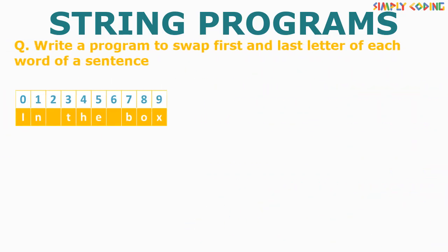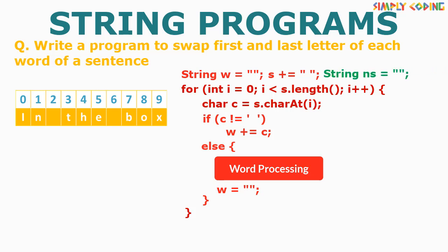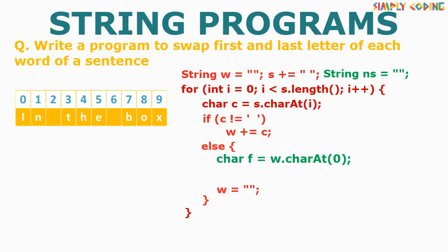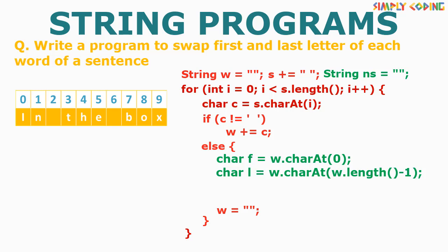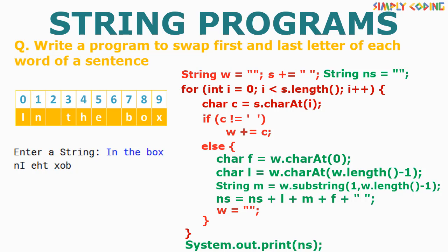The next program is to swap the first and last letter of each word. Here again we will take our template. We will declare a string variable before the loop. Inside the loop, we will first extract the first character using charAt(0) and the last character using charAt(w.length()-1). Then we will use the substring function from index 1 to w.length()-1 to get the middle part of the string. We now concatenate the last character at the beginning and the first character at the end to get our swapped word. We add it to the new sentence along with a space. Once out of the loop, we print the new sentence.